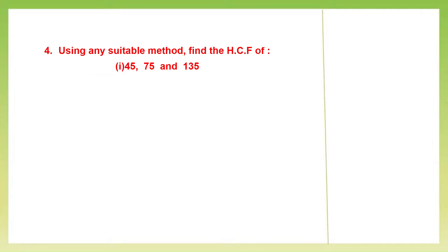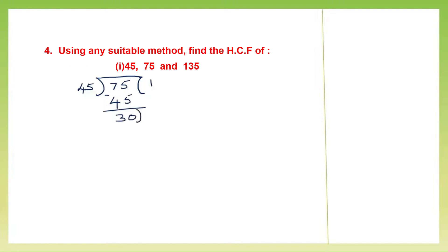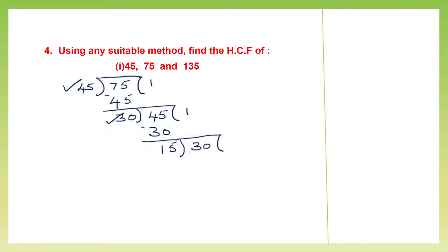So we'll divide the first two numbers. 45 is the divisor outside and inside we have 75. 45 ones are 45, minus 0; 7 minus 4 is 3. I'm going to continue the division, putting 45 inside. 30 ones are 30, minus; 4 minus 3 is 1. Let's continue the division, putting 30 inside. 15 twos are 30, minus 0. So I've got the remainder 0. So the HCF of these two numbers is 15.